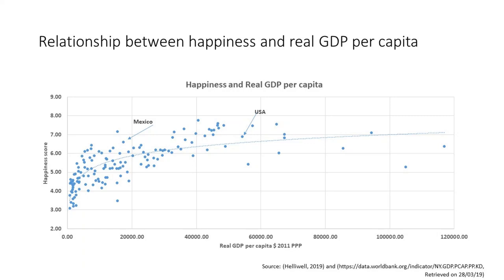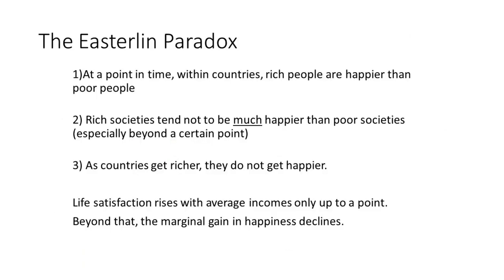This has prompted some economists to conclude that once countries get developed or relatively wealthy, the relationship between income and happiness breaks down — as countries get richer, they don't get happier. The starting point for studies of this relationship can really be traced back to a 1974 paper by an economist called Easterlin, who made three observations known as the Easterlin paradox. Number one: at a point in time within countries, rich people are happier than poor people. Number two: rich societies tend not to be much happier than poor societies, especially beyond a certain level of income. And number three: as countries get richer, they do not get happier.